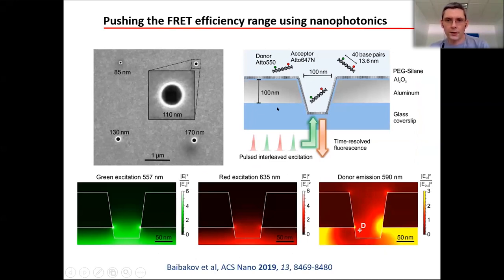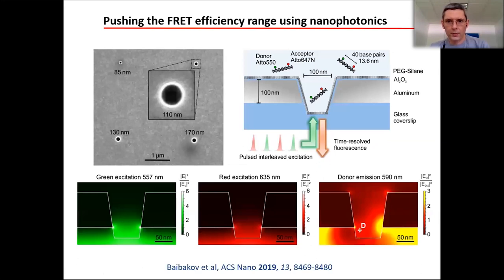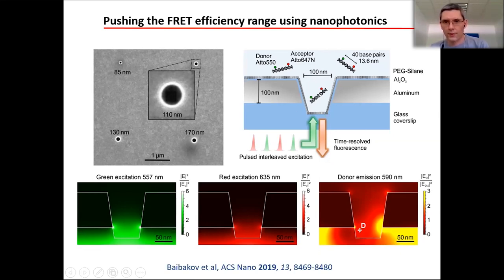It's a single dye for the donor and a single dye for the acceptor, on a fixed double-strand DNA system which is quite rigid. In a single hole of 110-nanometer diameter, we excite from below and record the FRET. FRET can be recorded optically in several ways: we can monitor the acceptor emission in the presence of the donor by recording photon bursts, or monitor the donor emission — in the presence of the acceptor, the donor emits faster and the fluorescence lifetime is reduced. These are two independent ways to measure FRET.